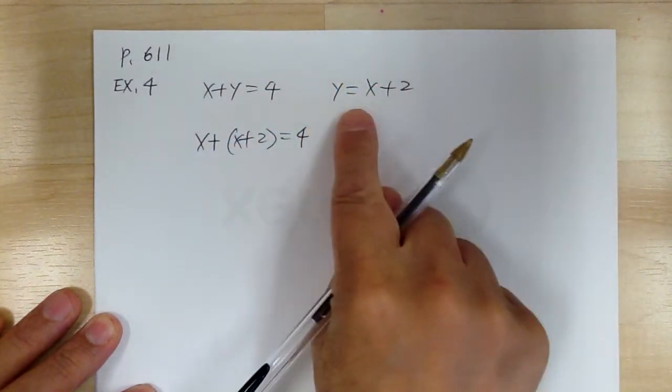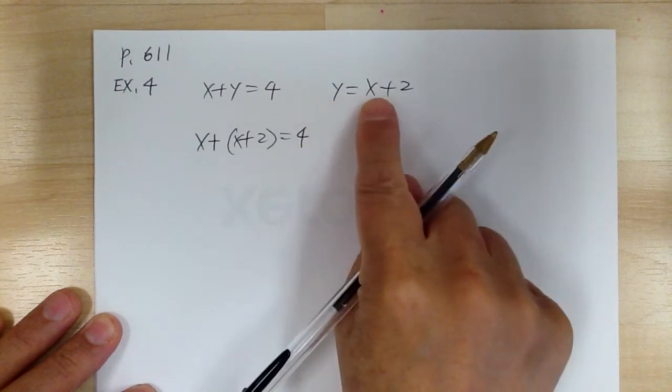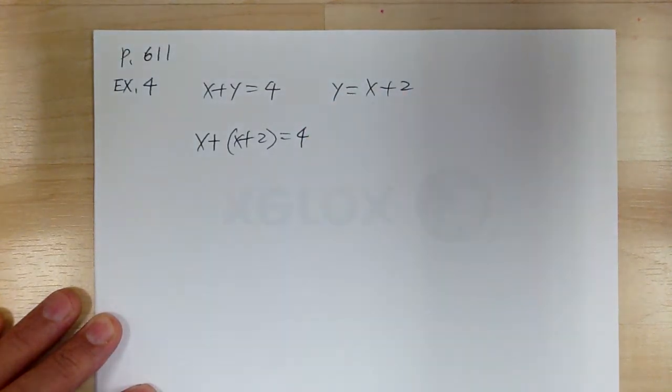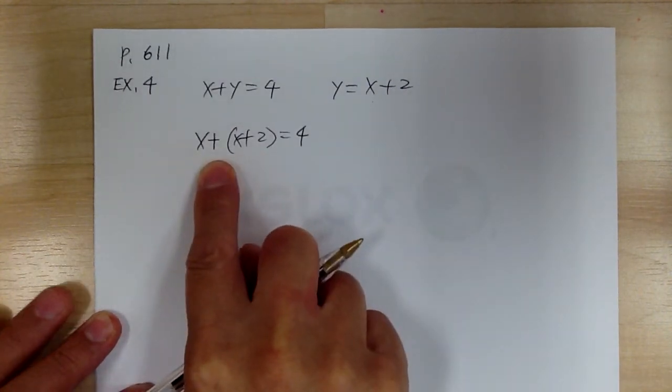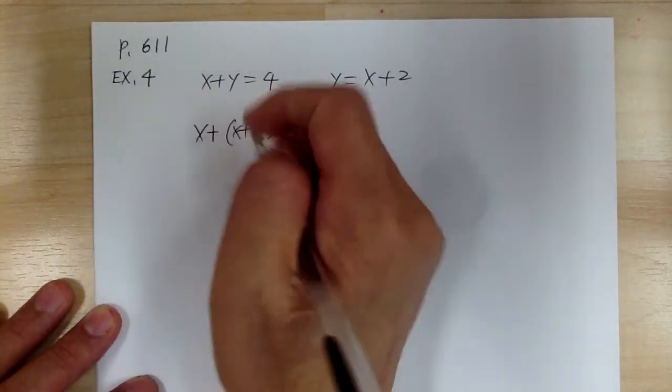This is just like a dollar bill and quarters - you're just making an exchange. Now you have only one variable left, so you can solve. That's going to simplify this.